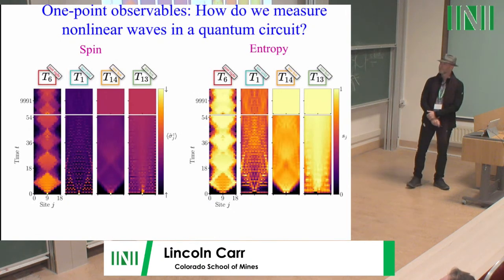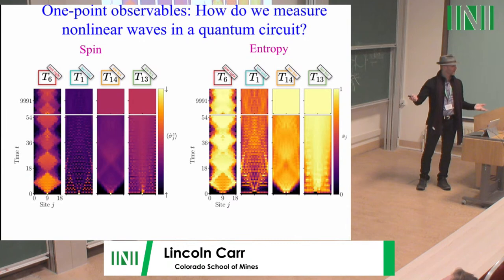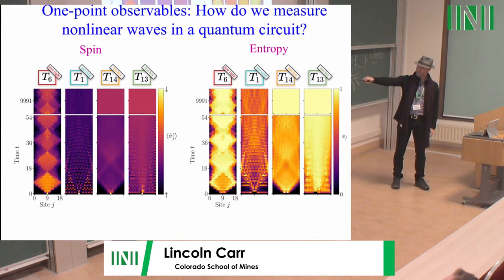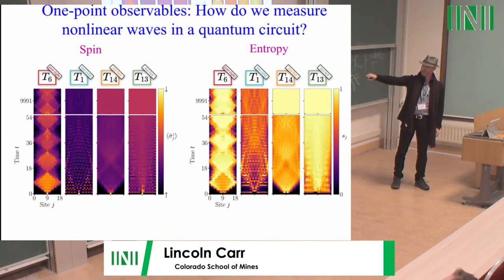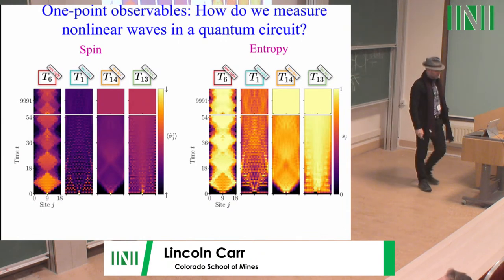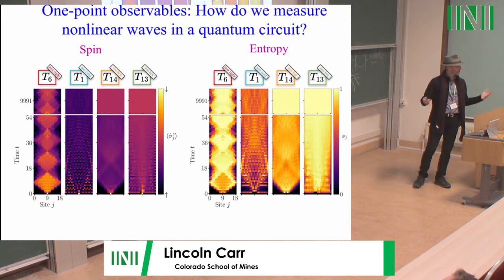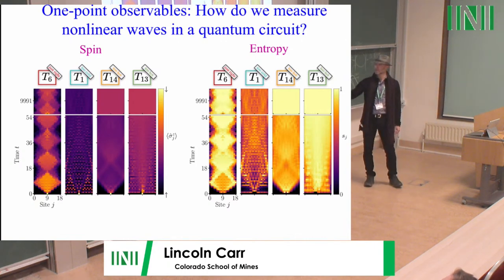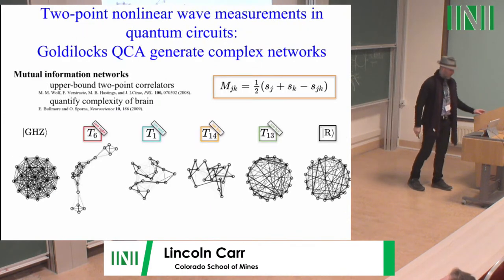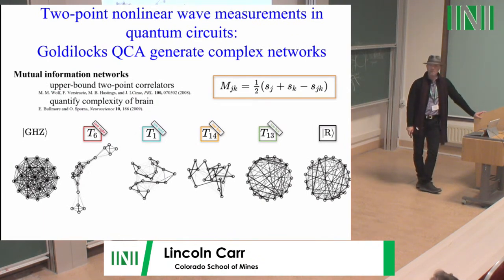What do I actually observe? Here is the Goldilocks rule T6 compared to some of the other rules, at both early and late times in a 19-qubit quantum circuit simulation. Hopefully everybody can see that there's lots of structure remaining in this Goldilocks rule, even at late times. Something you would never see classically is the quantum entropy — there's really no entropy analog in regular cellular automata. And the Goldilocks rule at very late times still has a lot of structure, unlike the other rules. To understand two-point correlations, one of the best ways is to use graph theory or network theory — the same kinds of measures used to understand complexity in the brain, also using mutual information.